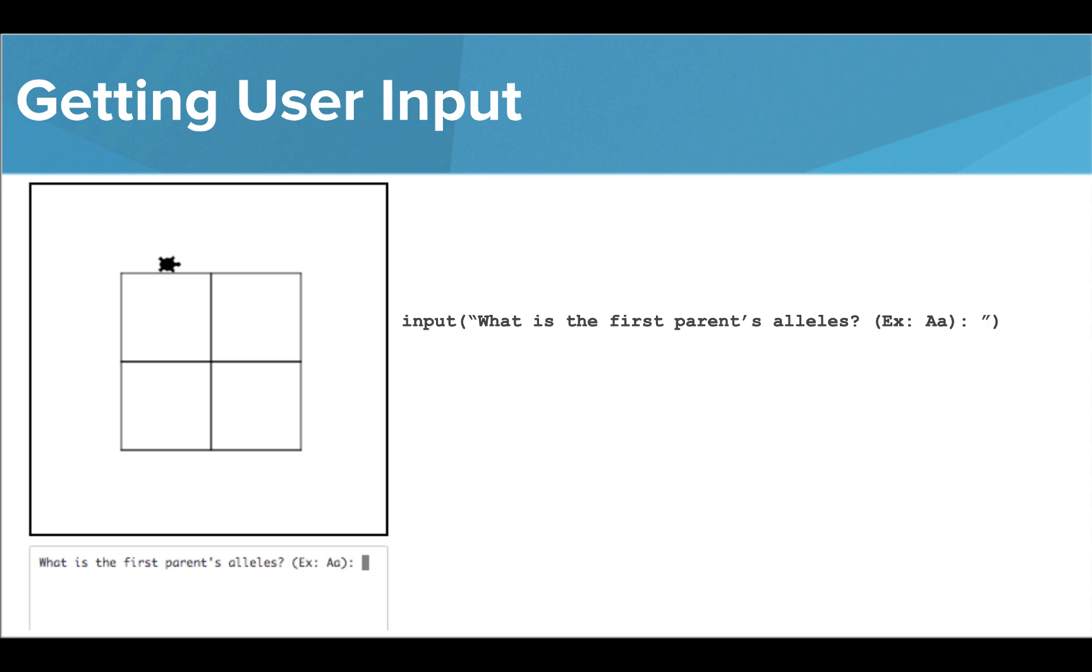In this case, we're going to ask the user for the alleles of the first parent. You'll notice that we are giving them an example of how to write this information because we want them to type their answer in a certain way.